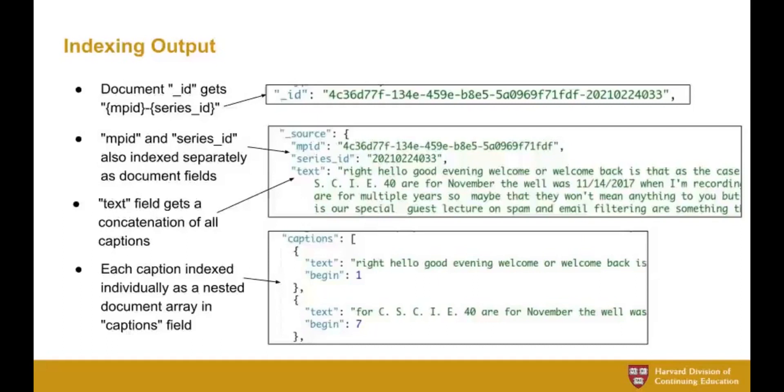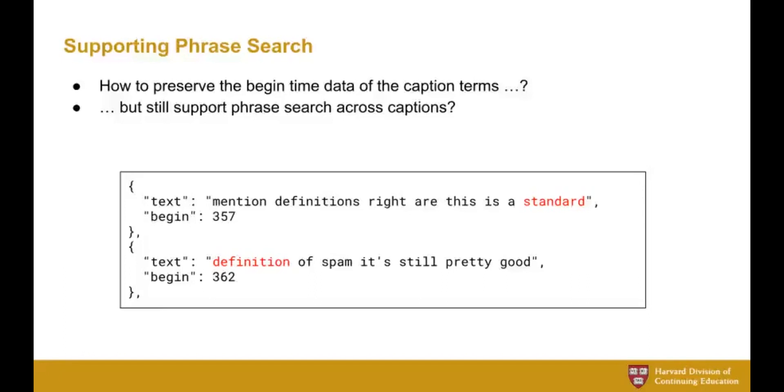Why do we do it twice? So the point there is it's the solution we came up with for supporting phrase search, meaning when the user encloses their search terms in quotes to indicate that they want results where those terms occur together. As far as we could tell, this is not really possible if you just index the captions snippets individually. In this example here, a user who searches for the phrase standard definition in quotes, they're not going to get a hit on this because the phrase occurs across that caption boundary.